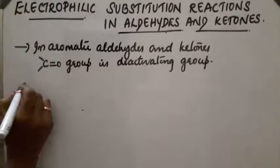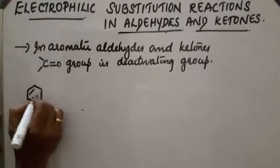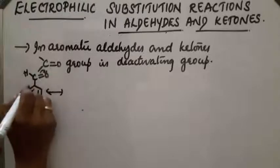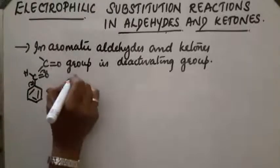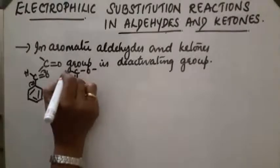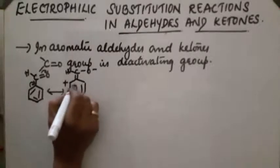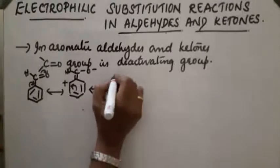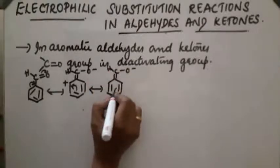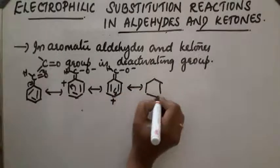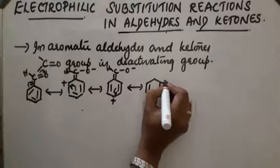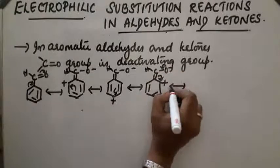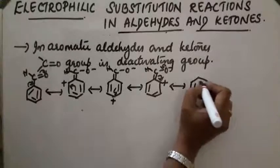Let us take an example: benzaldehyde and its different resonating structures. Let us draw the different resonating structures of benzaldehyde. In these structures, we can see O minus with positive charges appearing at different positions on the ring.